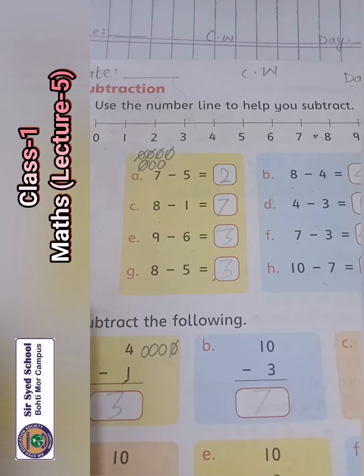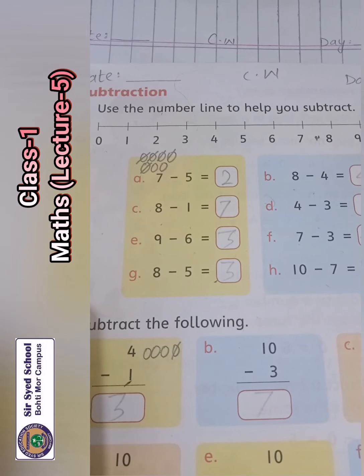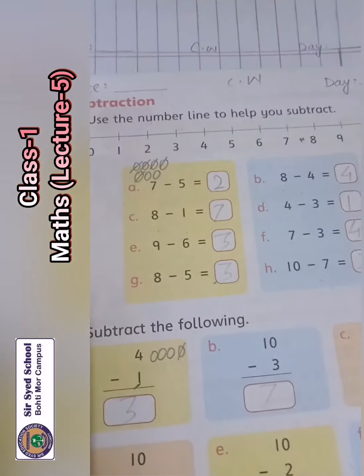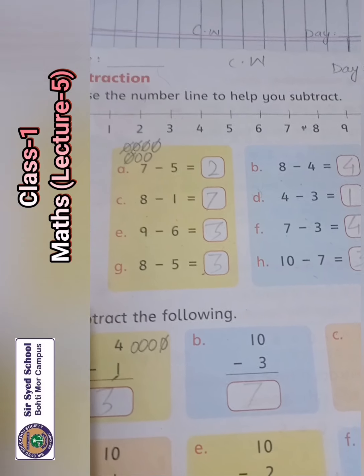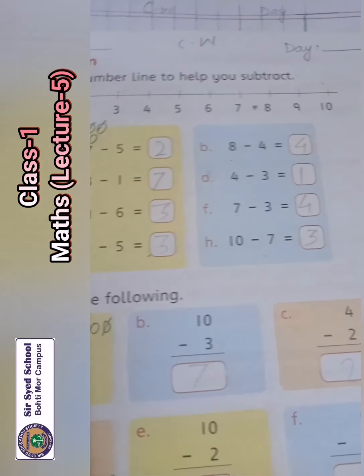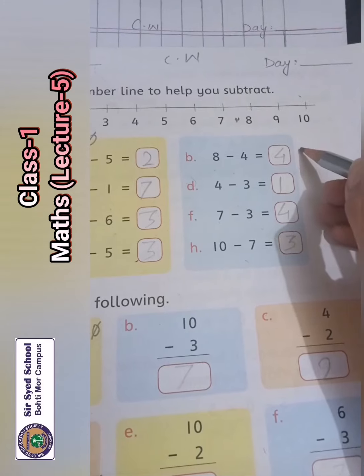A, 7 minus 5, 2. We have 7 balls and cut 5. Then we will answer 2. This is the answer.